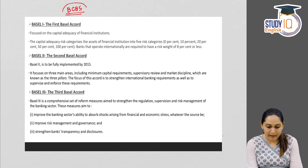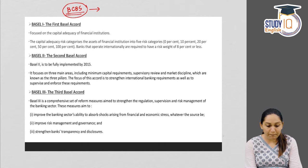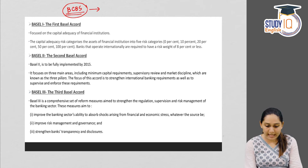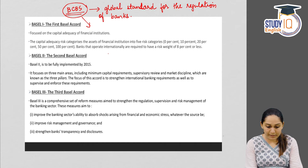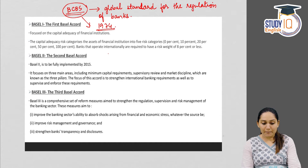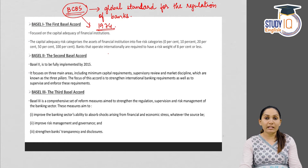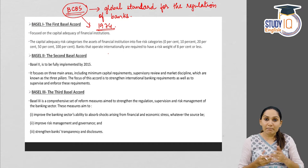The BCBS — Basel Committee on Banking Supervision — is the primary global standard setter for prudential regulation of banks. Its purpose is to set a universal or global standard for the regulation of banks. The BCBS was established by the central bank governors of the Group of 10 countries in 1974, and later this committee came up with the Basel norms.